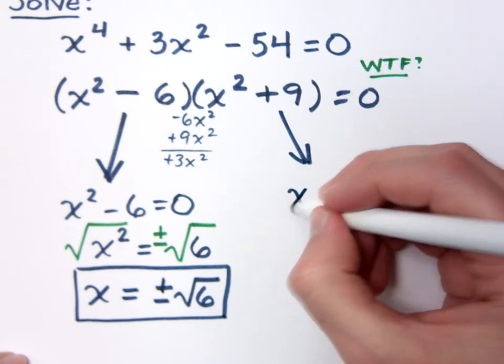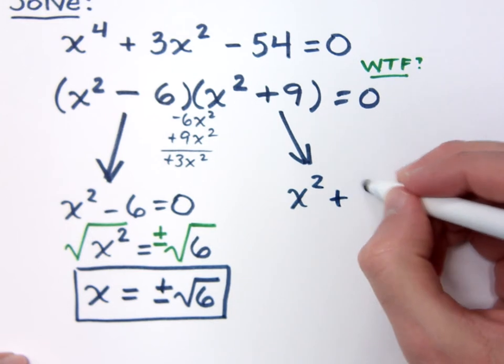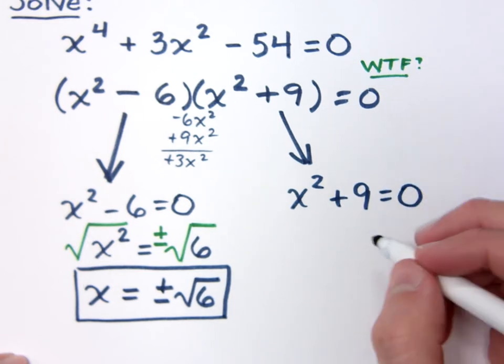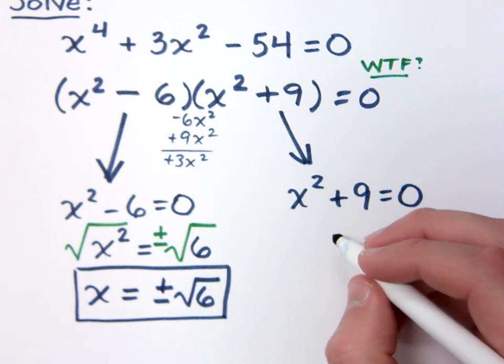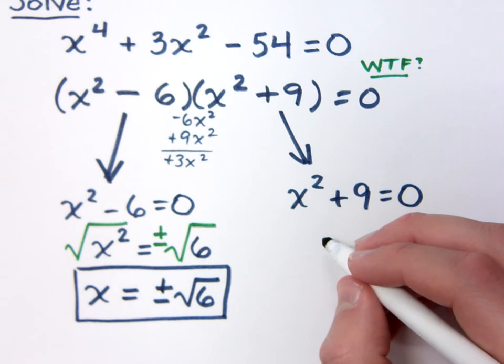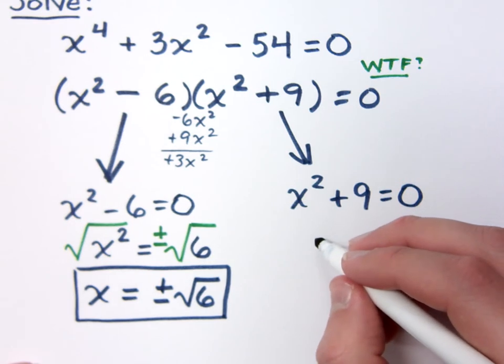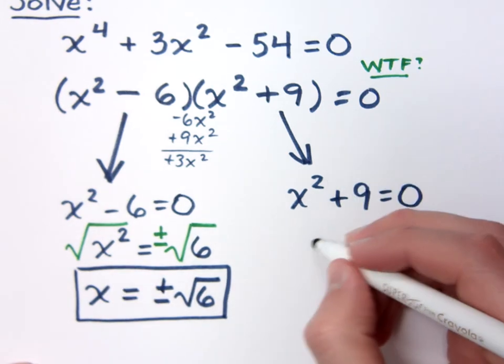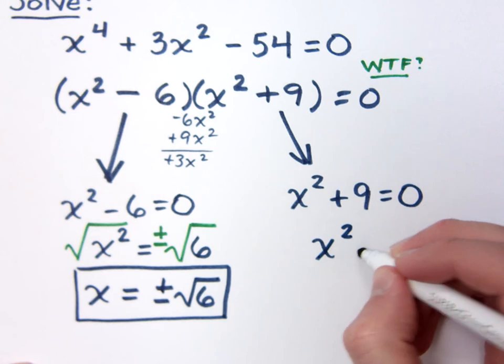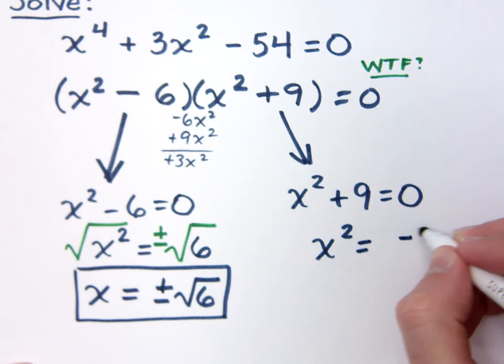So, if I take this guy, x squared plus nine is equal to zero. What do I do here? No one's going to say anything, huh? Look at what you have right here. Negative nine. Negative nine. You can drop the attitude. Then x equals plus or minus the square root of negative nine.